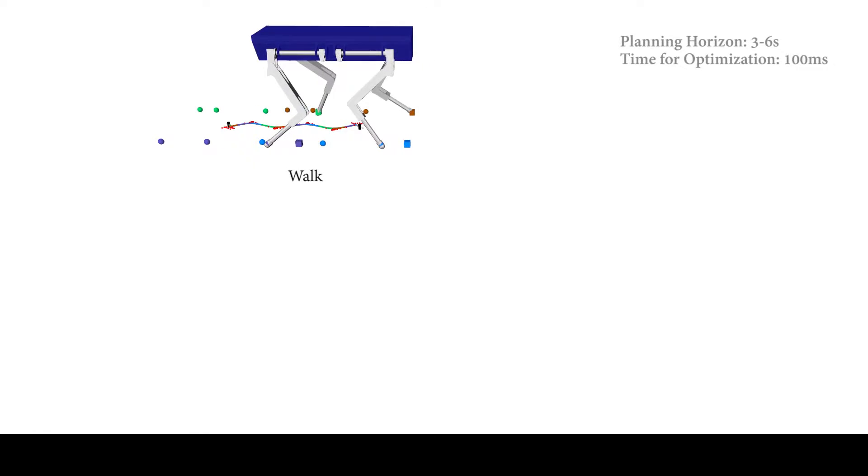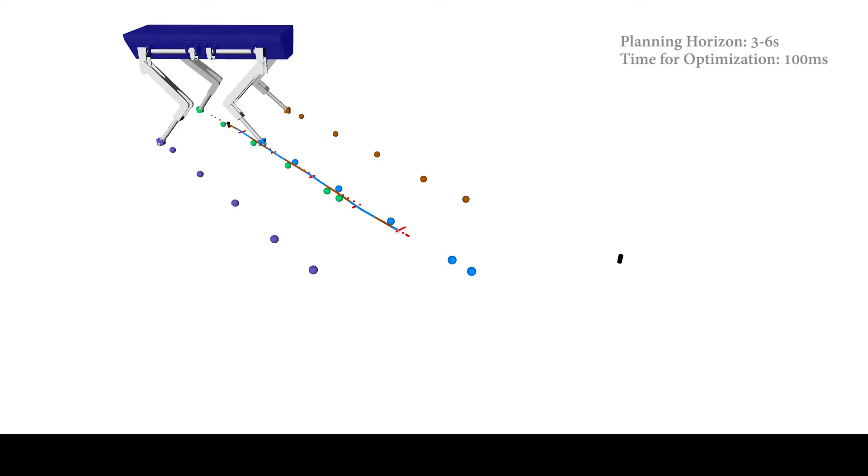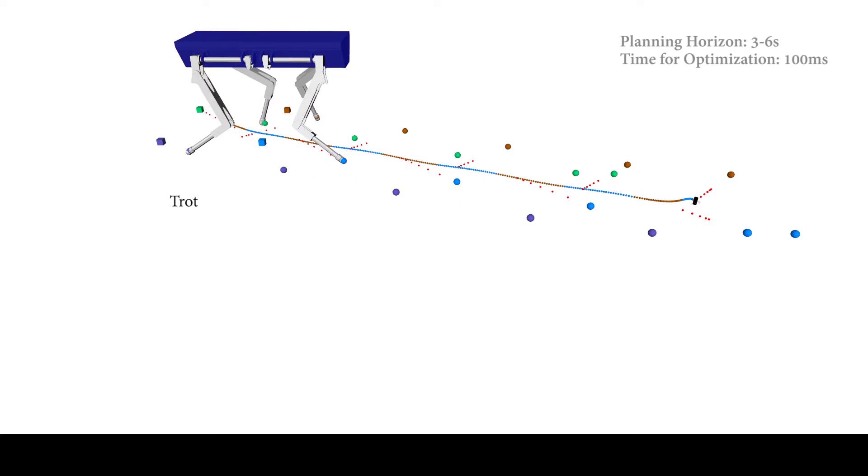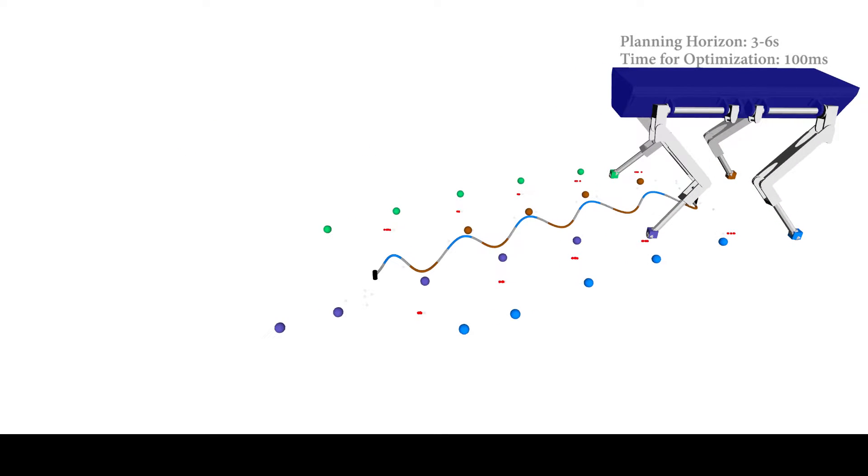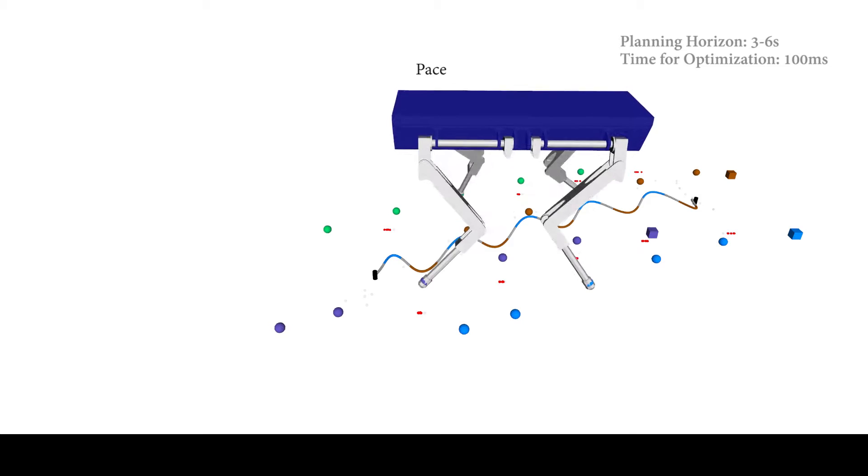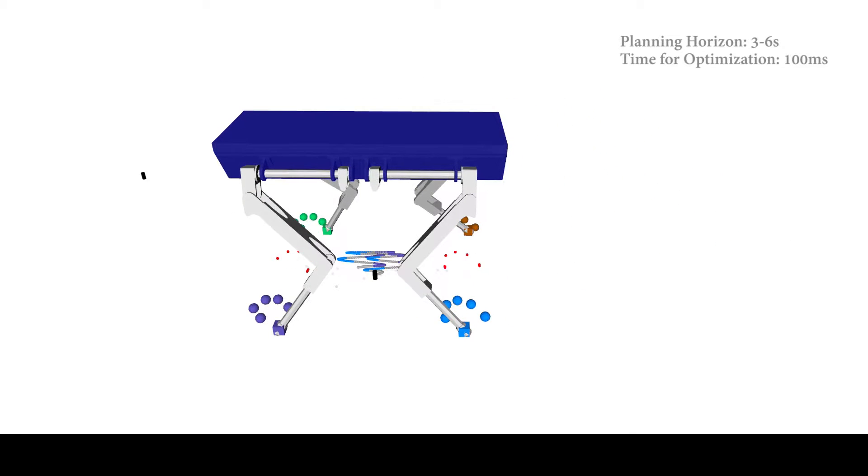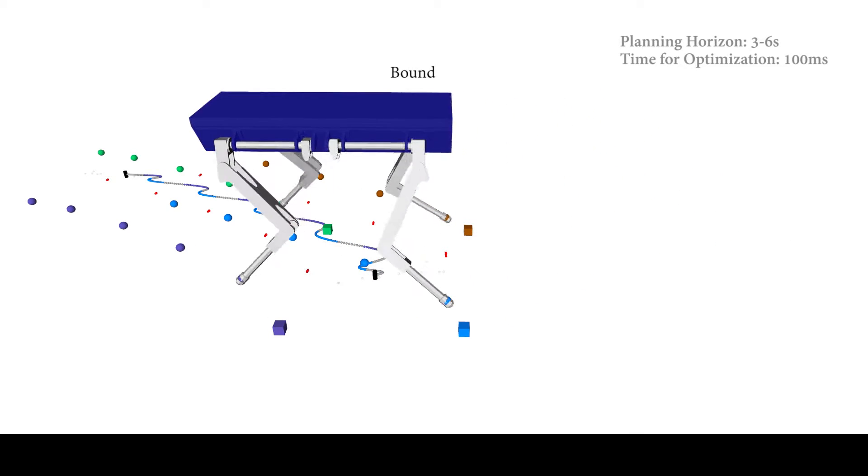Simply by changing the contact schedule, which determines which leg is in contact at what time, a variety of different motions can be generated. The geometry of the support areas of each of the motions is very different, ranging from support triangles as seen in the walk, to more restrictive support lines and also support points.